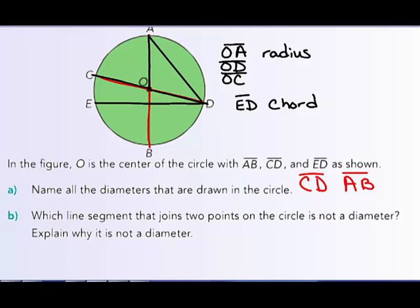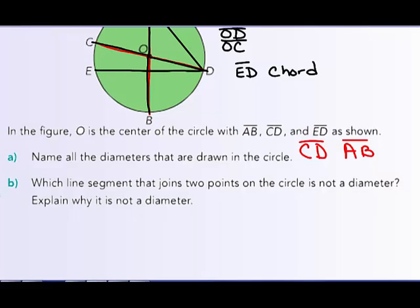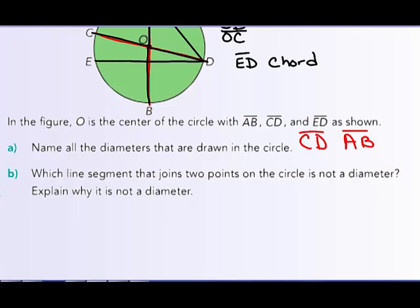We have four radii — and when you have more than one, they're called radii, not radiuses. We also have OB as a radius. Which line segment joining two points on the circle is not a diameter? That's ED. Why is it not a diameter? Because it does not pass through the center.